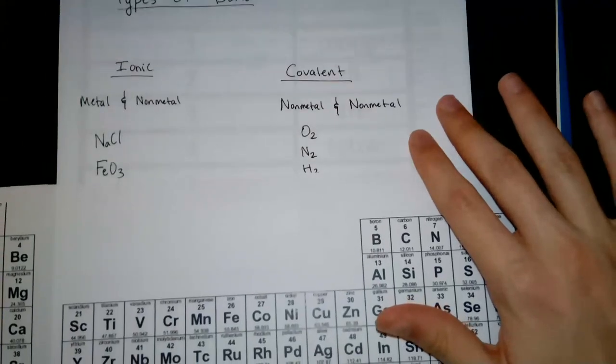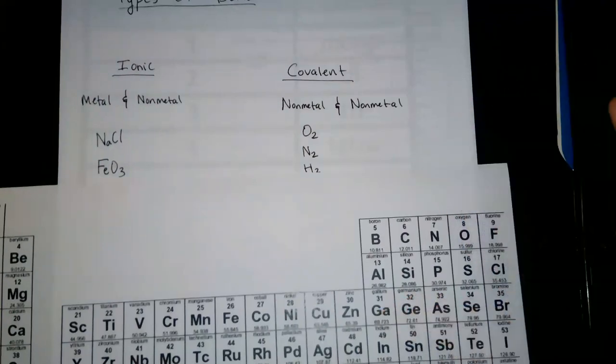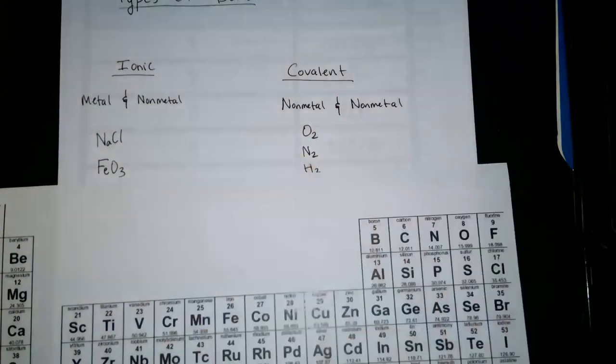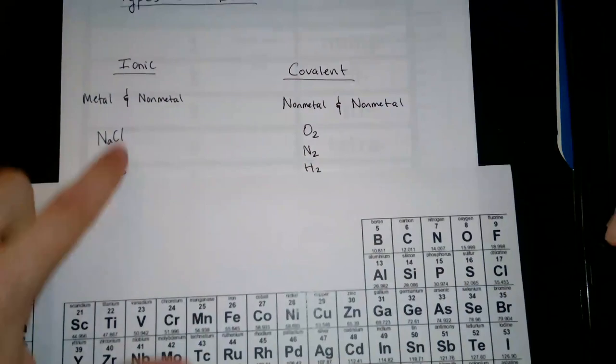And the same thing with iron oxide. Iron is a popular metal. We know that one's a metal. Oxygen, we know that's not a metal. So metal, non-metal, ionic.